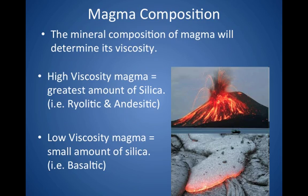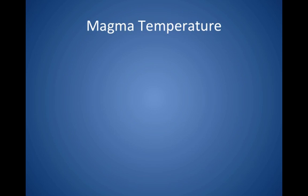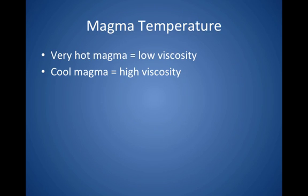Temperature is another factor affecting viscosity. Have you ever put syrup in the refrigerator and then tried to pour it — it goes really slowly. But heat it in the microwave and it comes out quickly. Very hot magma causes molecules to spread further apart, becoming less dense, so it flows more easily — giving it lower viscosity. Cool magma is the opposite: molecules get closer together, density increases, and it has higher viscosity and flows more slowly.